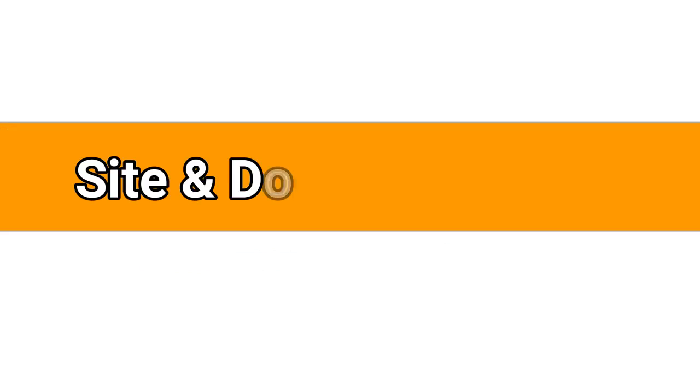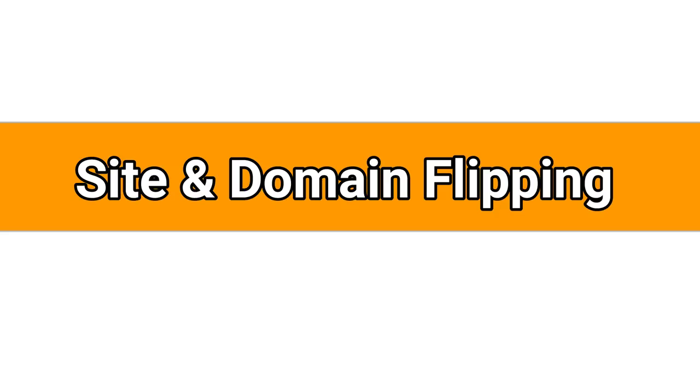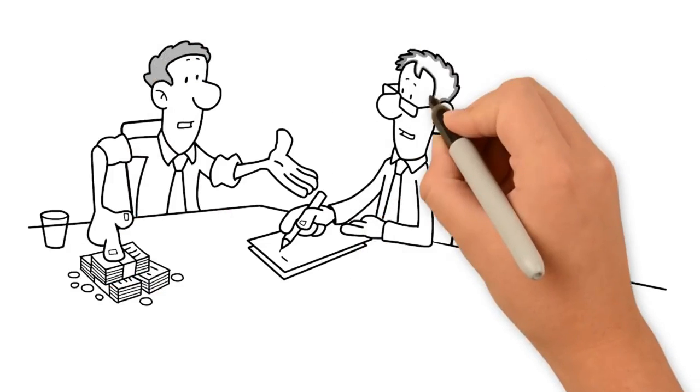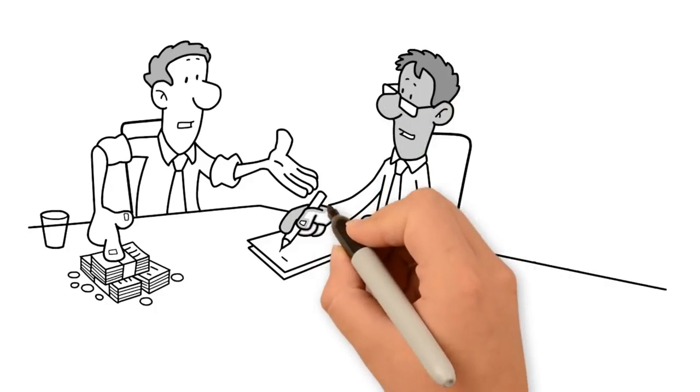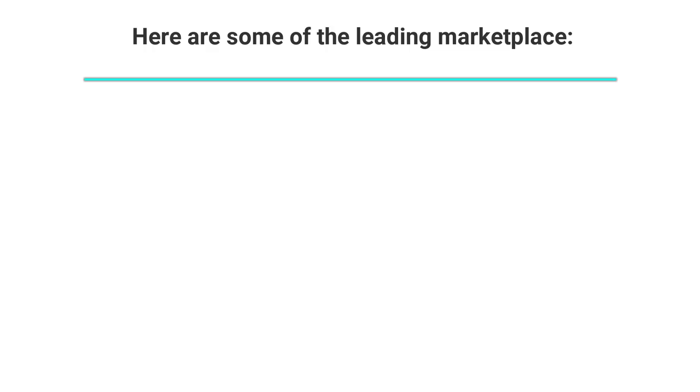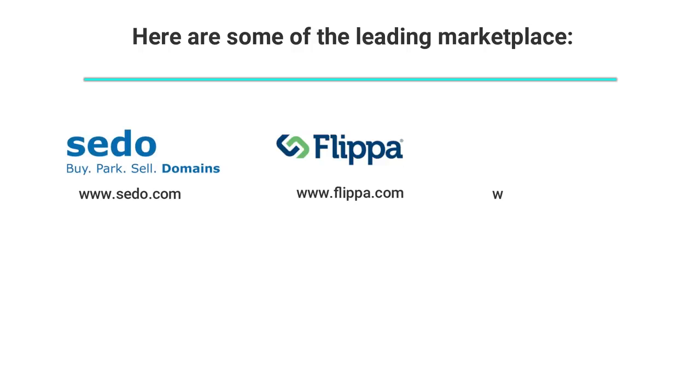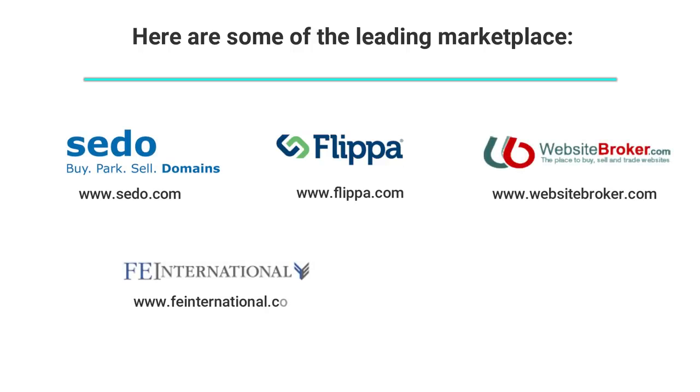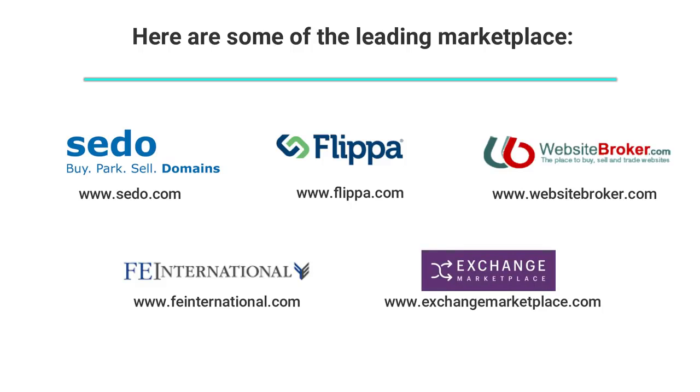Number 4: Site and Domain Flipping. Like real estate, this could be a fast way to make a lot of money by purchasing and reselling websites and domains for profits. Here are some of the leading marketplaces: Flippay.com, Sito.com, WebsiteBroker.com, FeInternational.com, ExchangeMarketplace.com.